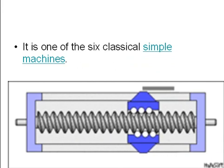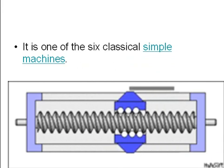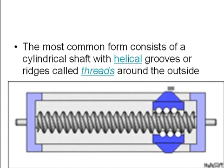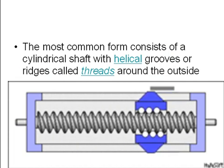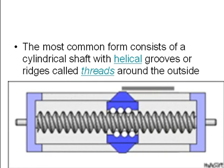It is one of the six classical simple machines. The most common form consists of a cylindrical shaft with helical grooves or ridges called threads around the outside.